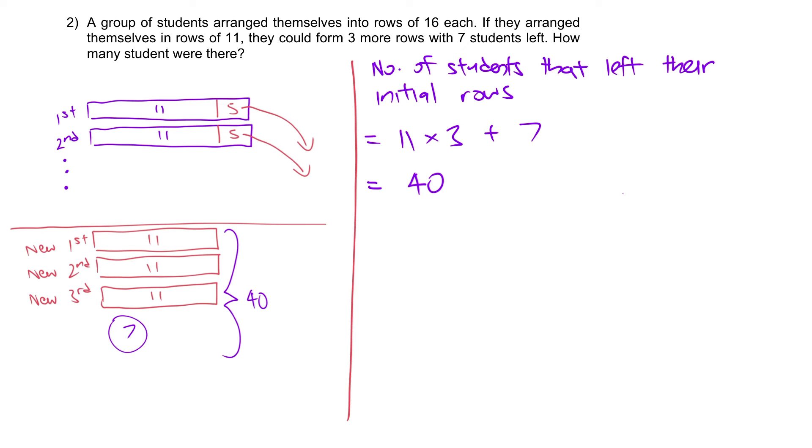From here we can calculate the number of rows at first, which is 40 divided by 5 to get 8 rows. Why 8? Again, every single row at first, five students have to leave. Five students have to leave. So in order to reach 40, five, five, five, that means there must be eight rows, isn't it, to form the 40?